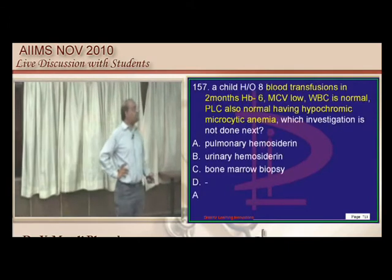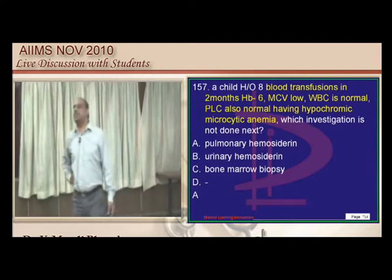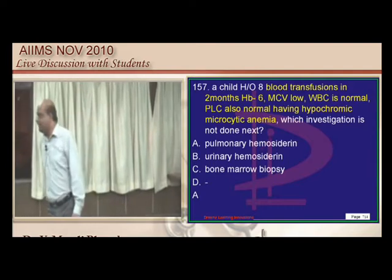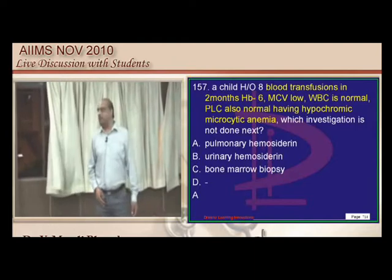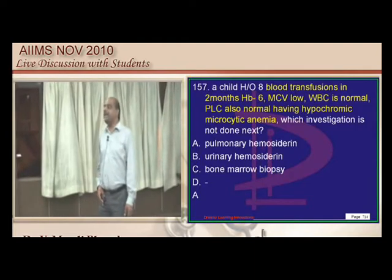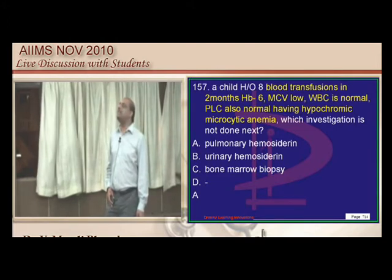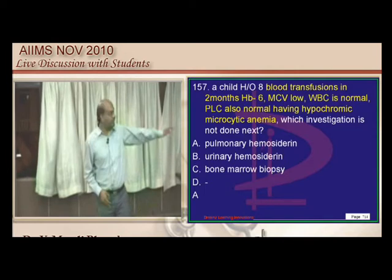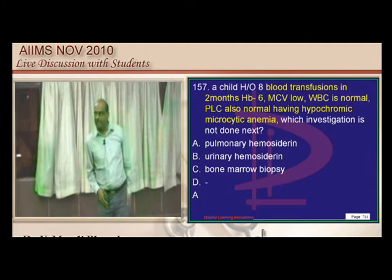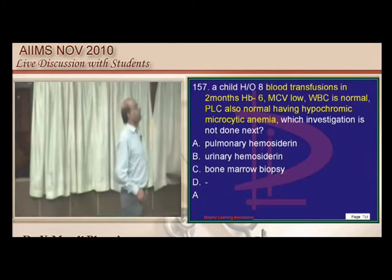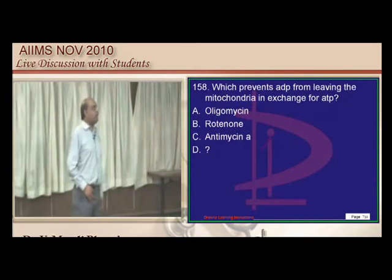With many blood transfusions, low MCV, and hypochromic microcytic anemia, you expect transfusion-associated hemosiderosis. In transfusion-associated hemosiderosis we do not depend on pulmonary hemosiderin levels — that is done for hereditary hemochromatosis, not transfusion-associated hemosiderosis.